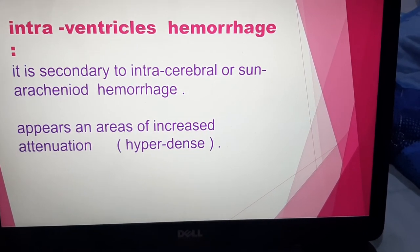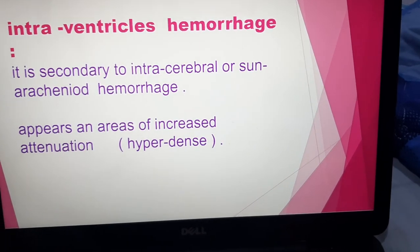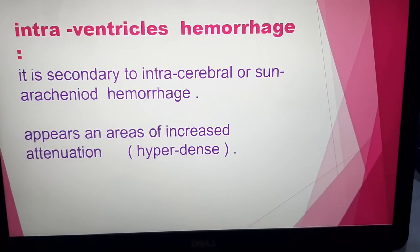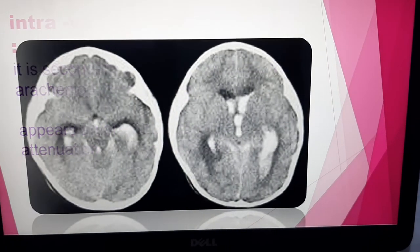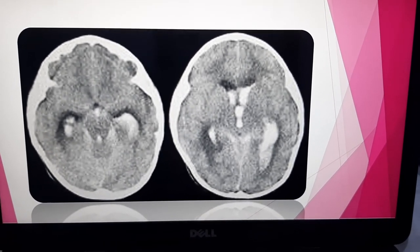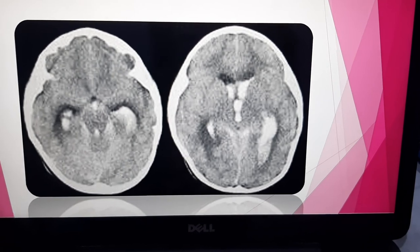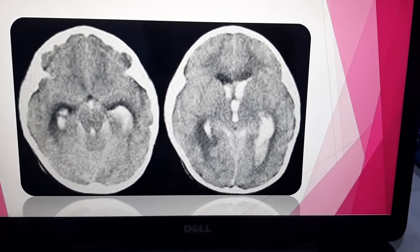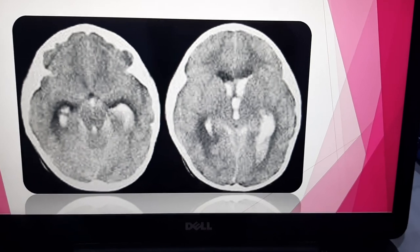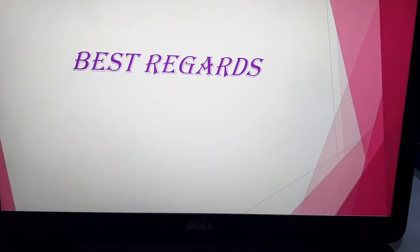Intraventricular hemorrhage occurs secondary to intracerebral or subarachnoid hemorrhage — when the hemorrhage seeds into the ventricle or the arachnoid space. When intraventricular hemorrhage is seen, we look for the primary cause, which is either intracerebral or subarachnoid hemorrhage. On axial CT scan, hyperdense hematoma is seen filling both lateral ventricles and the third ventricle — this is acute intraventricular hemorrhage. Thank you for your patience.